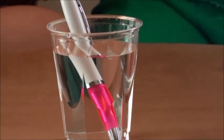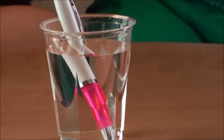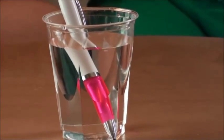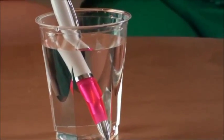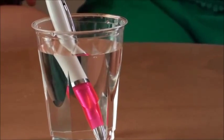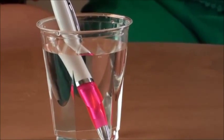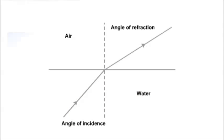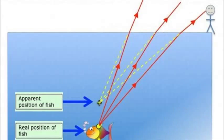This is because some of the light is travelling through air and some of the light is travelling through water and air. The same thing happens when we look at fish in the sea.